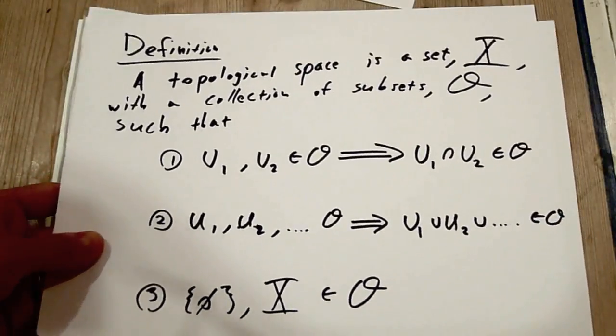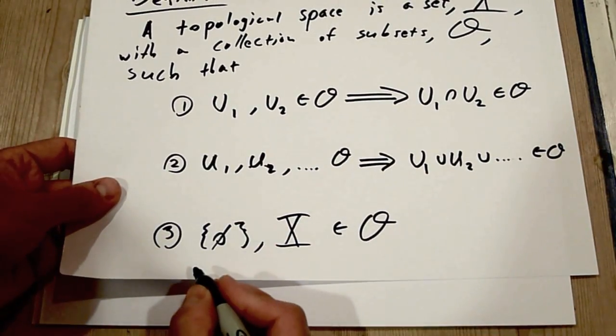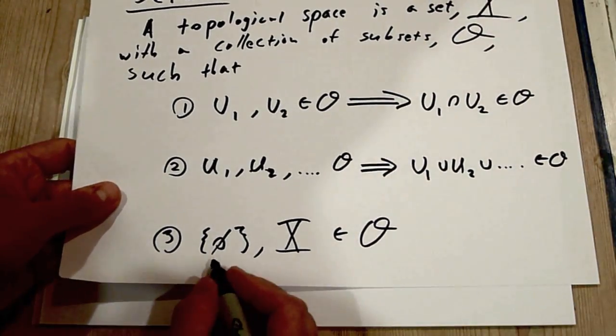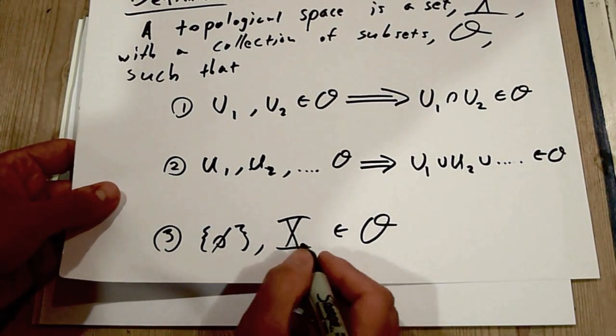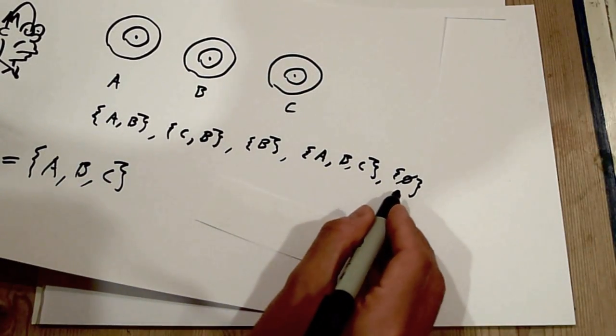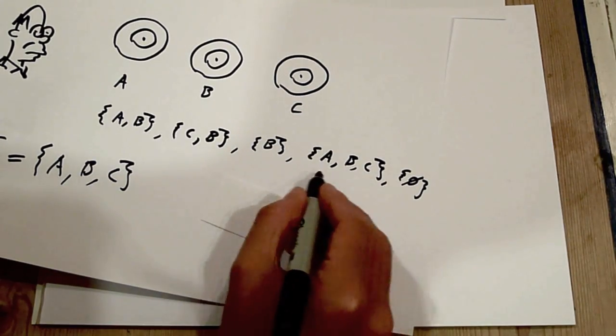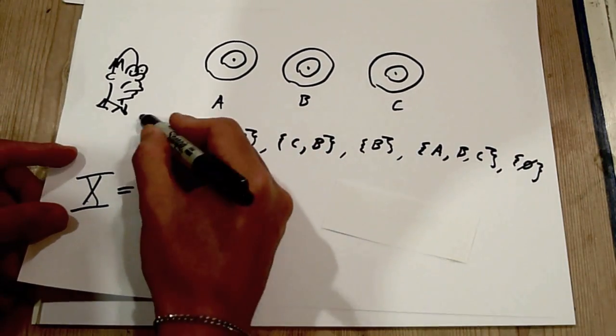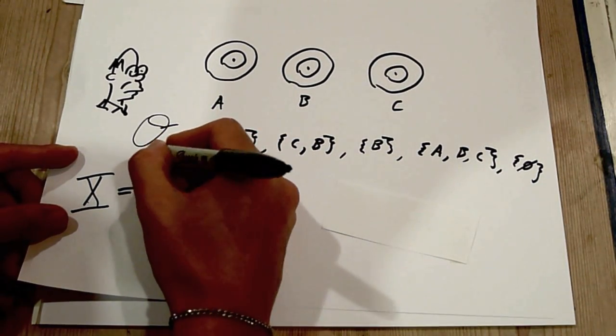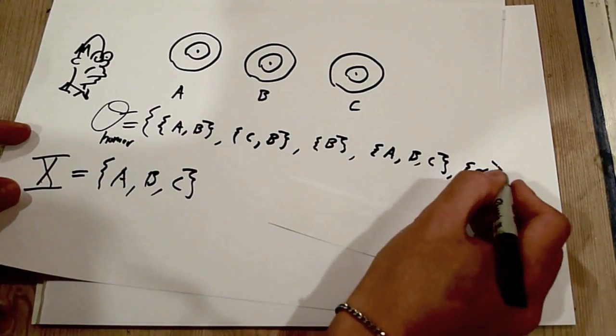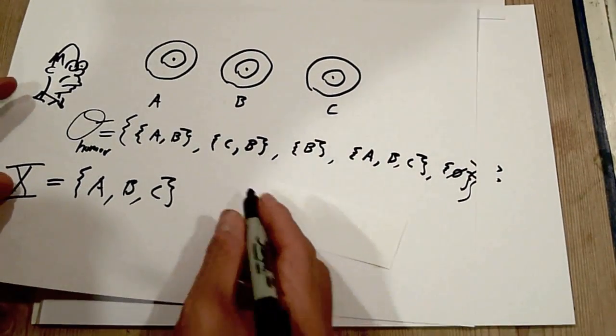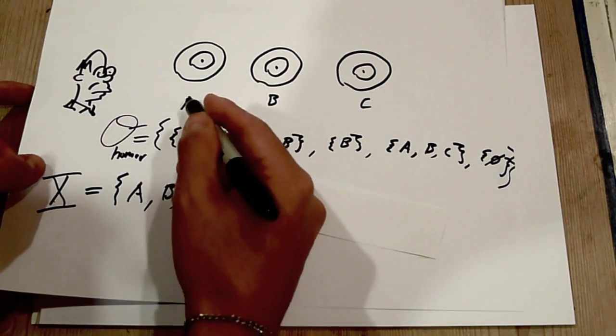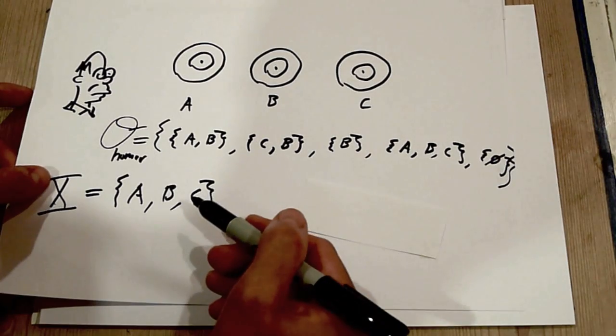So, the last thing to check is the third property of topological space. So, what's the third property? The third property says that the empty set and the everything set are open sets. So, let's see. Now, look at that. There's the empty set and there's the everything set. So, it looks like this set of sets here, this collection here, which we'll call O of Homer, this set of sets makes the set of targets A, B, and C into a topological space.